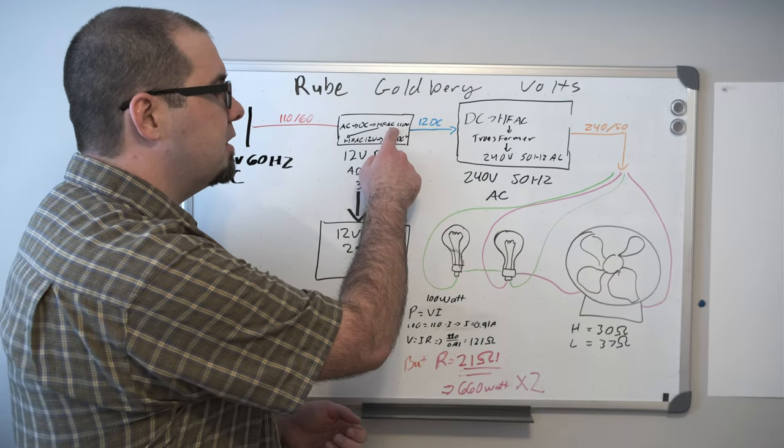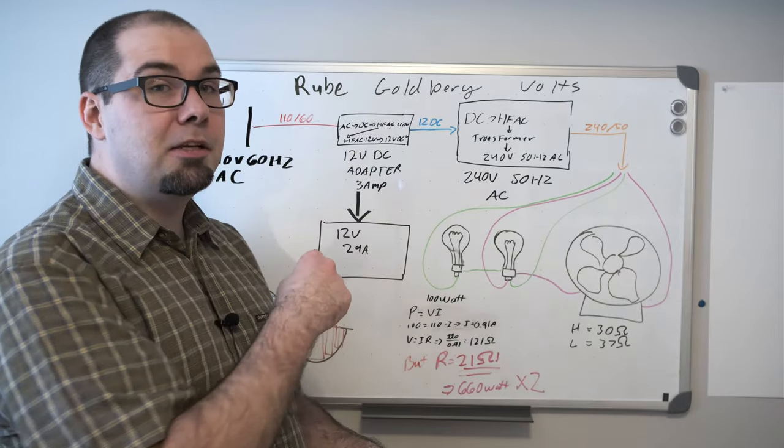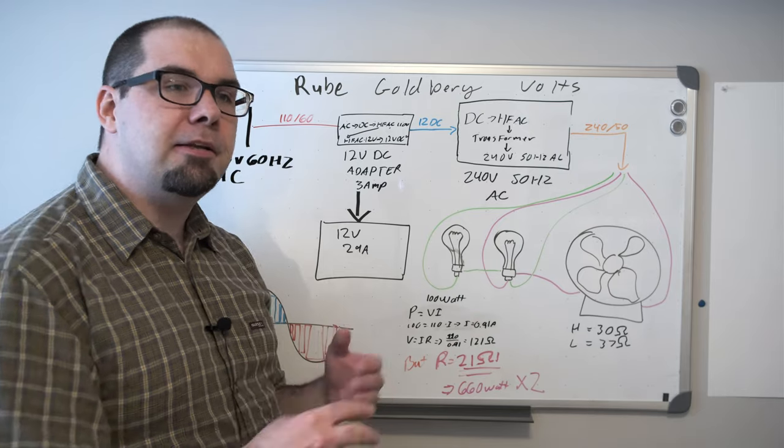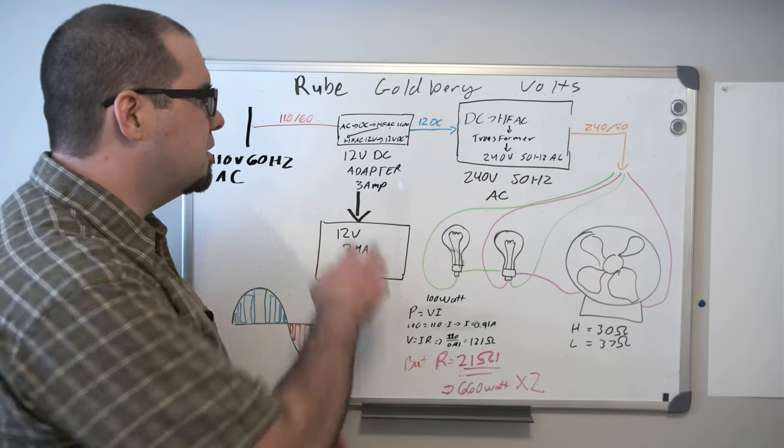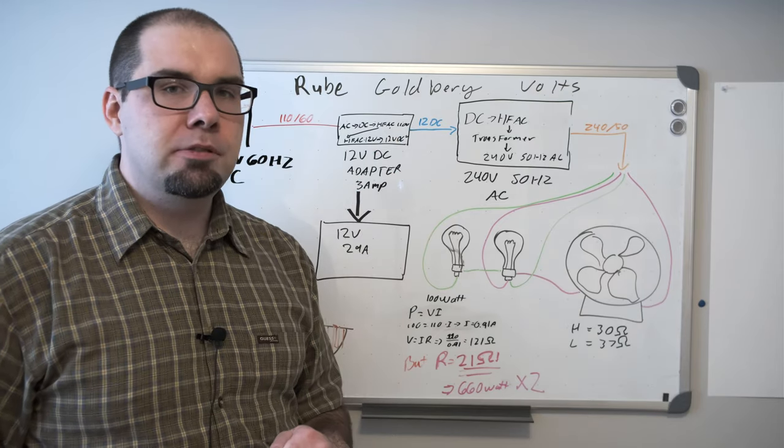So AC to DC, high frequency AC, which then goes through the transformer, generating high frequency, low voltage AC, and then you rectify that and adjust it through regulators and such. So there's about five conversions going on here. That gives us 12 volts out.